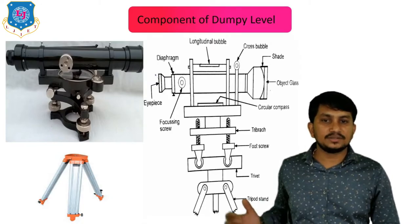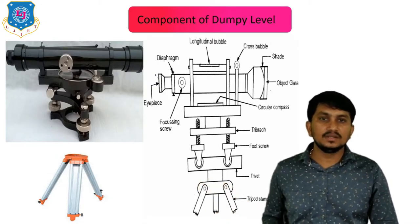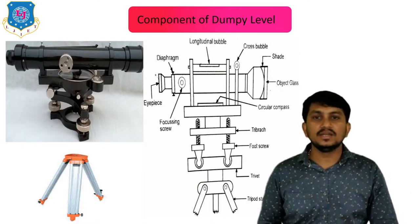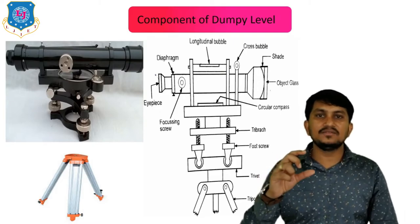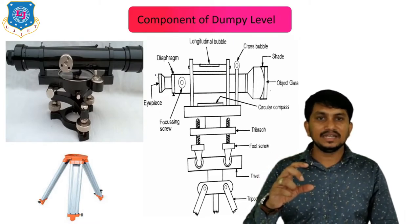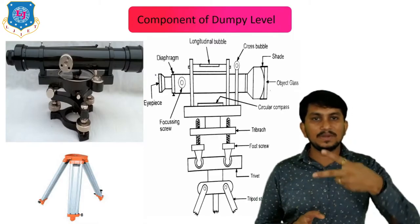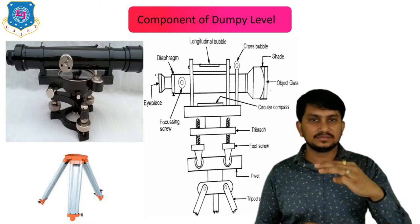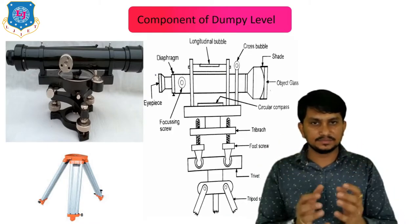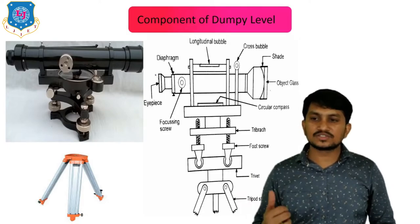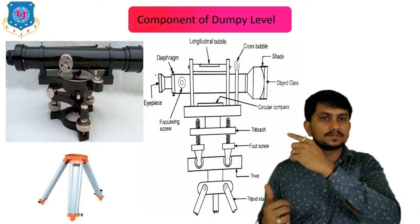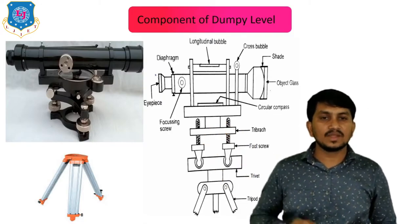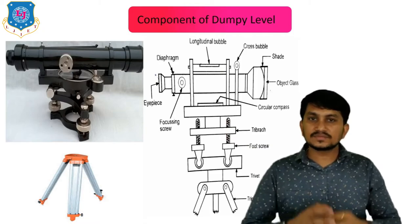The tripod stand is the base; the dumpy level is attached to it by a screw. The bottom part of the dumpy level is called the leveling head. The leveling head contains two plates with three screws in between. The lower plate is called the trivet, the upper plate is called the tribrach, and the screws in between are called foot screws.